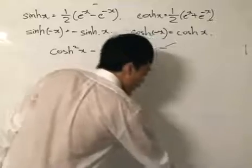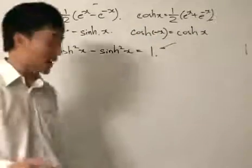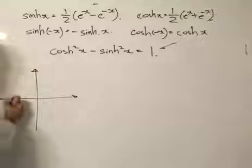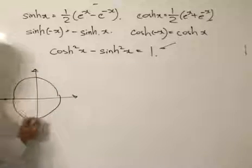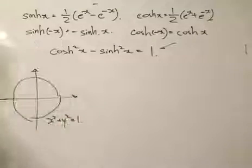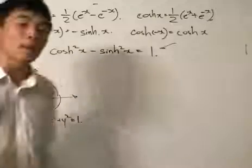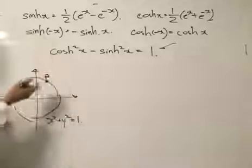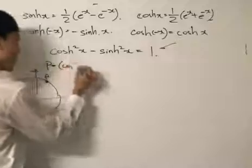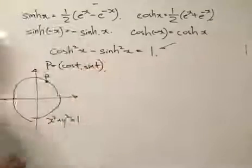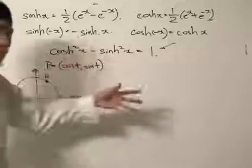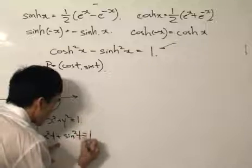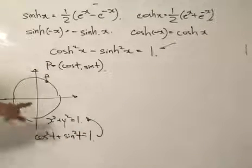Trigonometric functions are called circular functions because, for a unit circle with equation x² + y² = 1, we can define a point P parametrically as P = (cos t, sin t). Whatever value of T we put in, cos²t + sin²t = 1, so the point falls on the circle. For hyperbolic functions, they are called hyperbolic because there is a function called the hyperbola, with equation x² minus y² = 1. To graph the hyperbola parametrically, we use x = cosh t and y = sinh t.